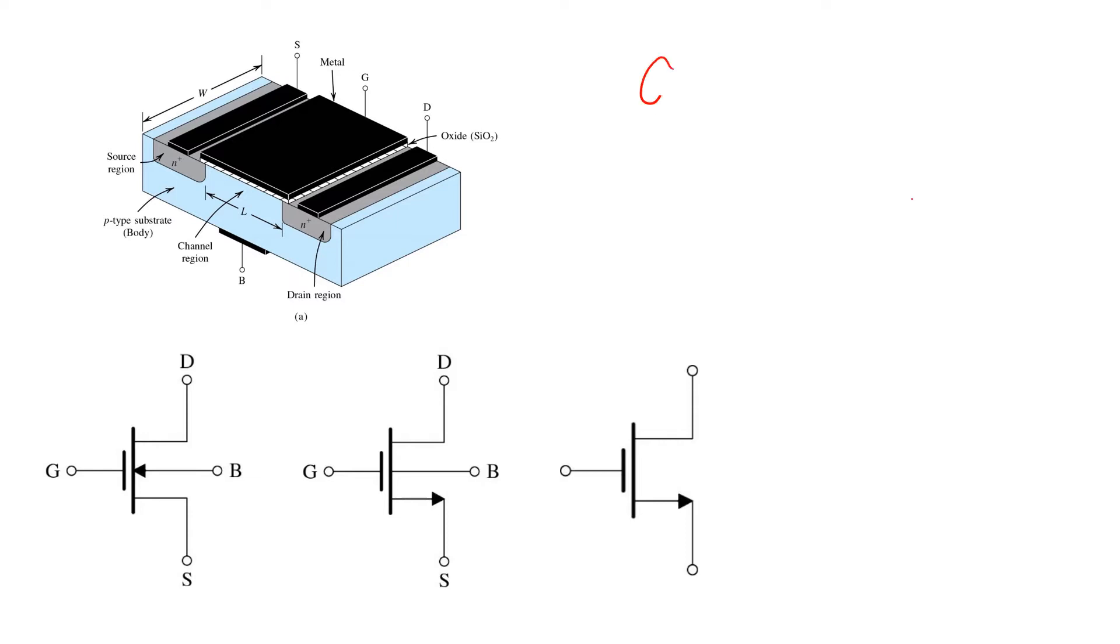In all cases, G is the gate, D is the drain, S is the source, B is the body.